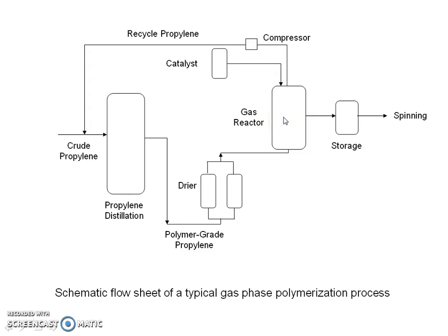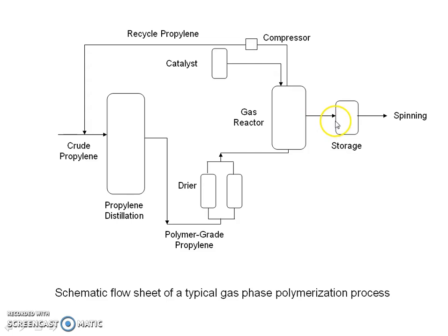The propylene polymerizes in the reactor. About 15% propylene reacts in the reactor and the remaining 85% evaporates and is recycled back. This unreacted propylene is recovered, compressed, repurified and then recycled to the reactor. The polymer so formed is combined with suitable additives, stored and shipped, and may be used for spinning.